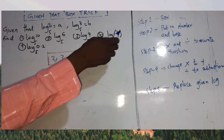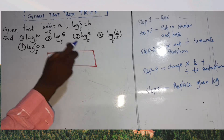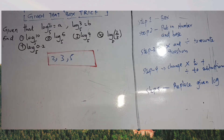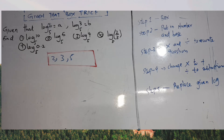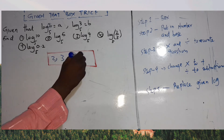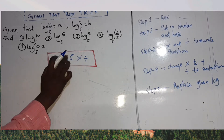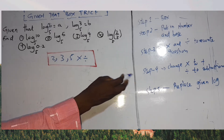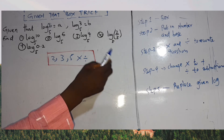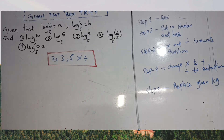Step 2: after you put the numbers in the box, use multiplication and division. These are the only two operations you use inside the box to rewrite the question. Step 3: change the signs — multiplication changes to addition and division changes to subtraction.